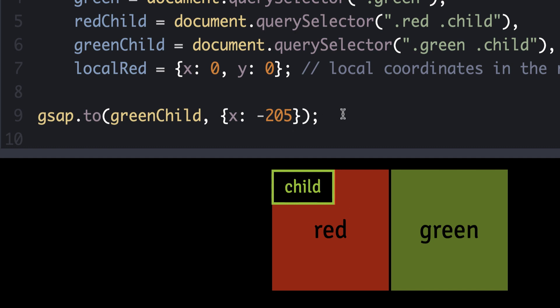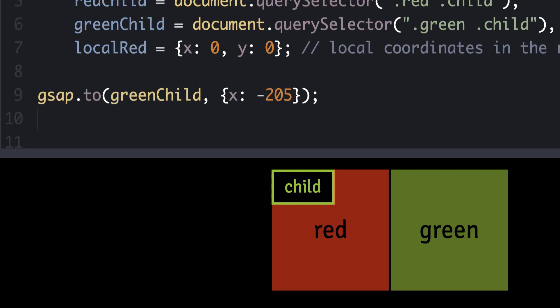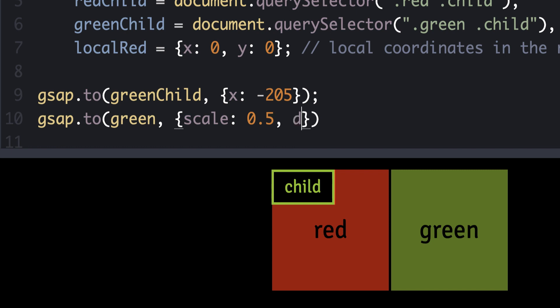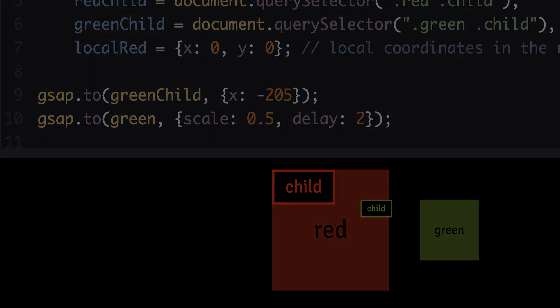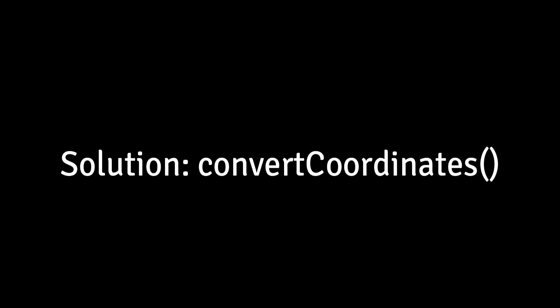There's also about 5 pixels of space in between them, so let's try maybe negative 205. We'll set up a tween: `gsap.to` the green child to an X of negative 205. These are transforms we're applying. If we run this it should line up perfectly. However, watch what happens if we scale the container — the green div — to a scale of 0.5 with a delay of 2. It animates over, then scales down, and the green child is still at a local coordinate of negative 205 inside the green div, but all those pixels have been shrunk down.